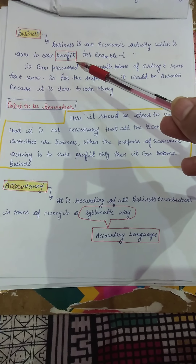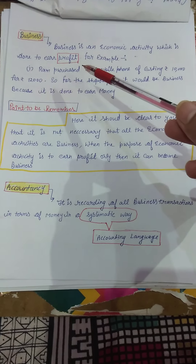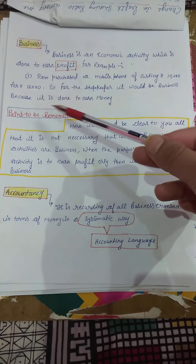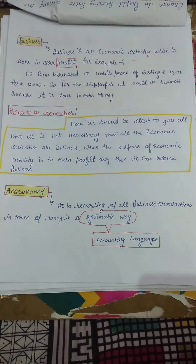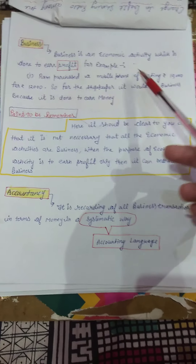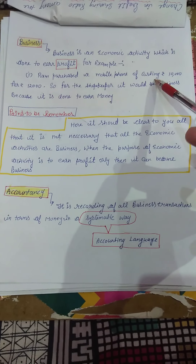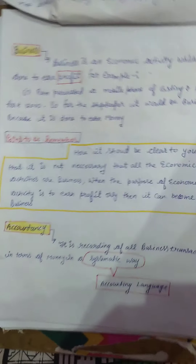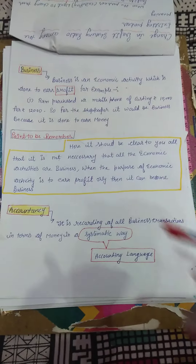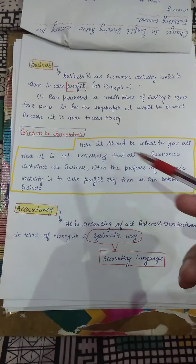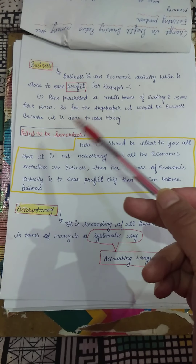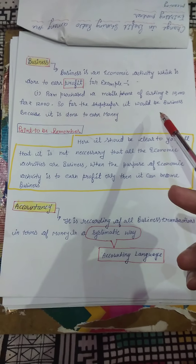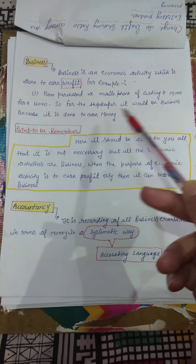So we have discussed the meaning of economic activity and non-economic activity. Now we will discuss the meaning of business. Business is an economic activity which is done to earn profit. There is no doubt this is an economic activity, but specifically it is done to earn profit — the purpose of business is to earn profit.